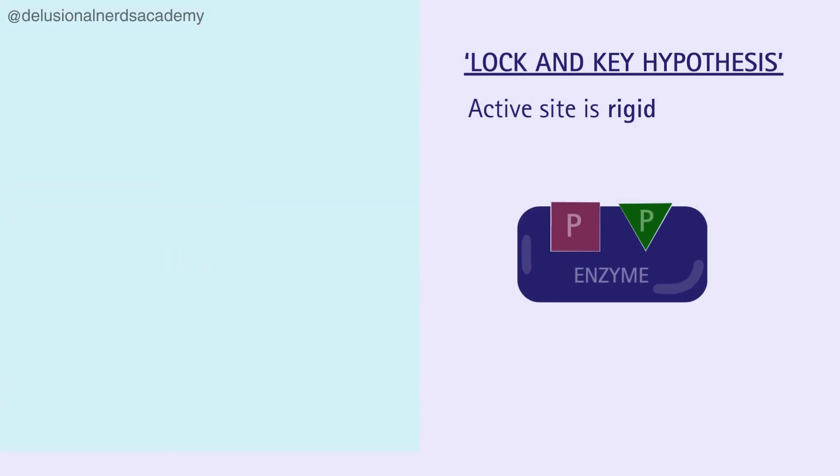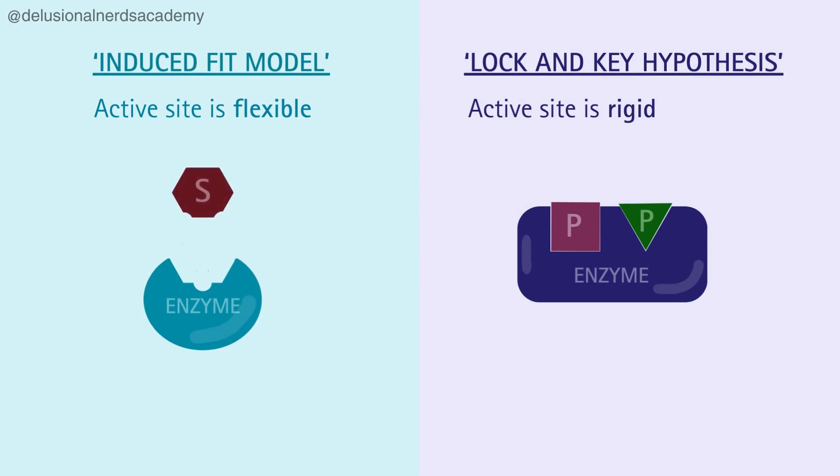But with time, it was observed that the enzyme can actually modify the active site slightly so a substrate can bind to it. This model is known as the induced fit model. The enzyme and the substrate initially come into contact, but the fit is not perfect. The active site adjusts its shape to better accommodate the substrate and simultaneously, the substrate begins to modify its shape until both fit perfectly into each other.